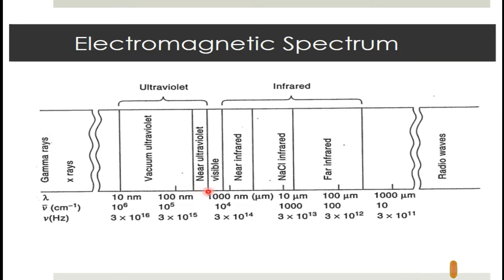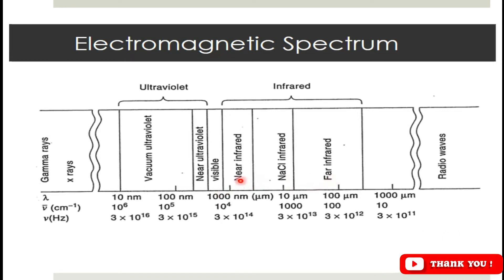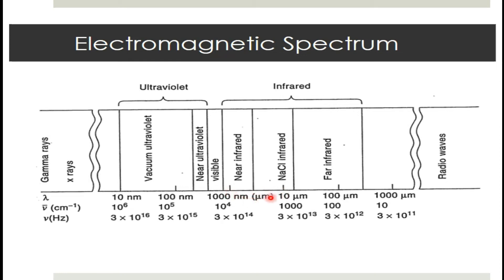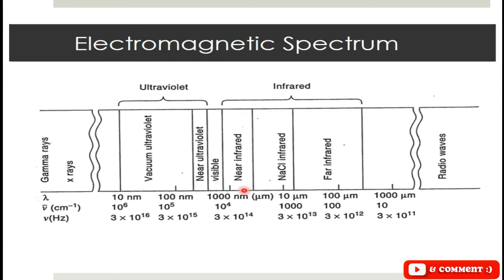The visible region extends from 380 nanometer to 780 nanometer. After that we have the infrared region, which is again divided into near infrared, mid infrared, and far infrared based on its distance from the visible region.